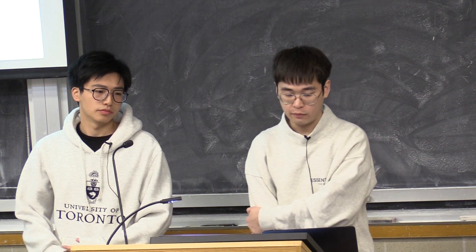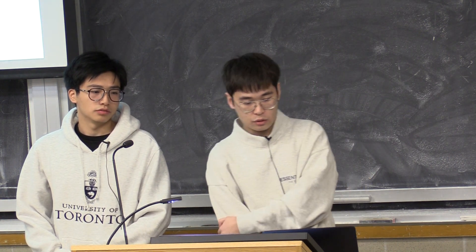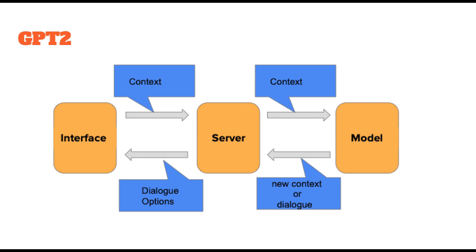We also create a GPT-3 version, which we will discuss in a few slides. For our software, we use React and Flux to develop an interactive game, and deploy it on an EC2 instance. For the GPT-2 workflow, the model first receives the previous context, then generates three different dialogue options. Based on what the user selects, the model appends the selected dialogue to the context. The new context is then treated as the next context.